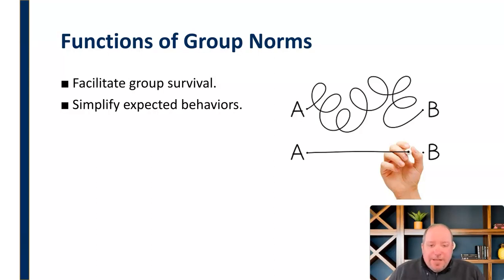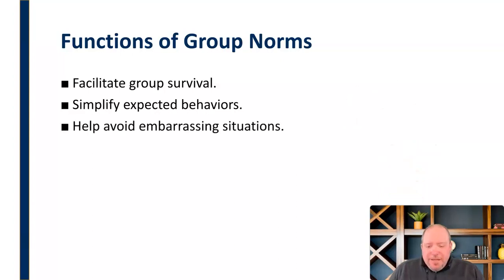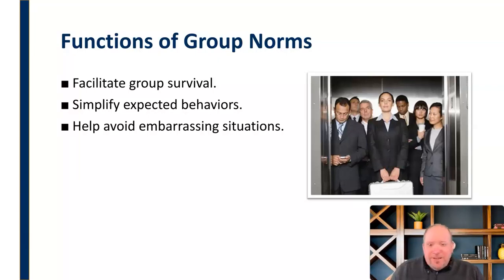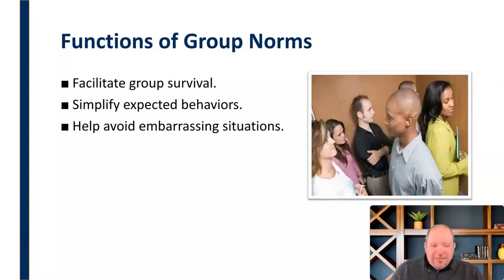It simplifies those expected behaviors and allows group members to know: when this happens, this should be my response. It can also help us avoid embarrassing situations. When we know the norms of a group or the expected behaviors, we can avoid embarrassing situations. Most of us know when we get on an elevator, you're supposed to face forward, look at the numbers, don't talk to people, keep your eyes straight ahead — this is elevator etiquette. Unless you get that one weird guy who comes in and stands backward and stares at people, which makes everybody uncomfortable. A norm can help us avoid that type of situation by knowing how this group handles things and how we behave.